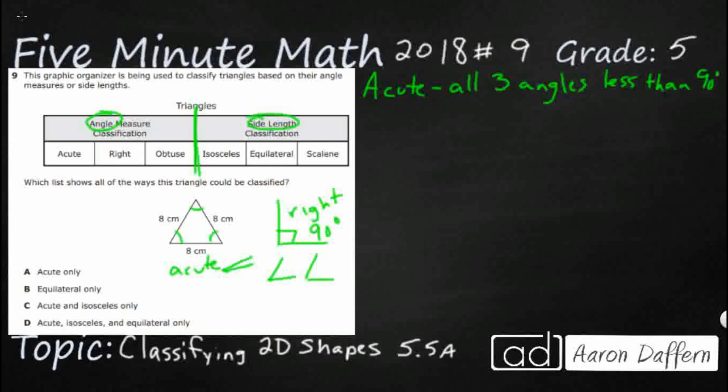Now we have to kind of eyeball this but imagine if you were to draw like a straight line and make it perpendicular here and you see that all of these angles are smaller than that. So it does look like we can call it an acute triangle.